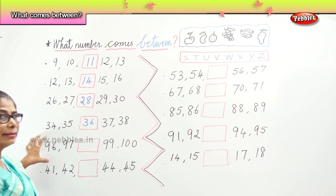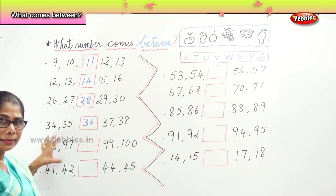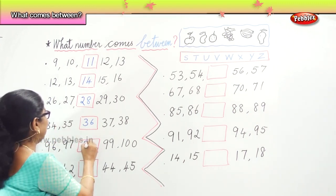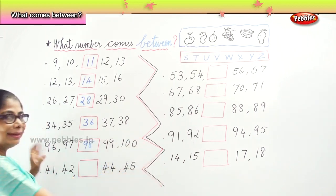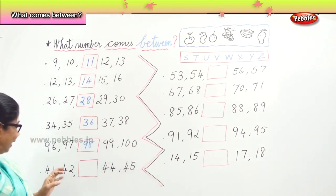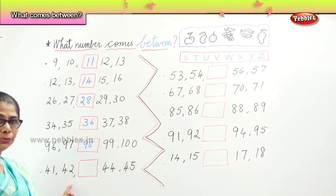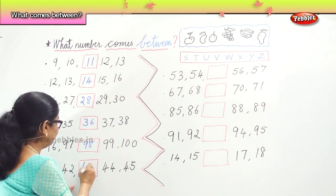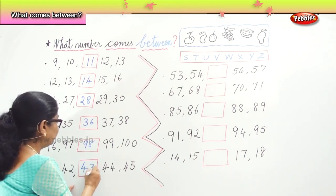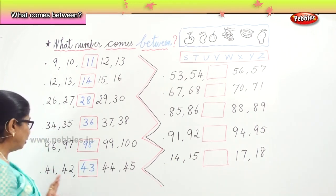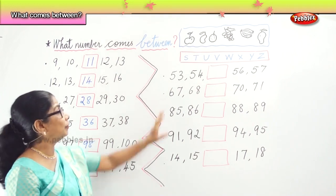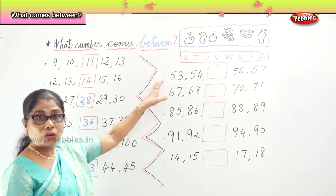Next: 96, 97, __, 99, 100. Good — 98! Then: 41, 42, __, 44, 45. Very good — 43! So: 41, 42, 43, 44, 45.